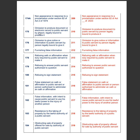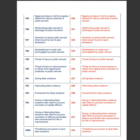Section 183 of the IPC deals with resistance to the taking of property by the lawful authority of a public servant, whereas Section 218 of the BNS deals with resistance to the taking of property by the lawful authority of a public servant. Section 184 of the IPC deals with obstructing sale of property offered for sale by authority of public servant, whereas Section 219 of the BNS deals with the same. Section 185 of the IPC deals with illegal purchase or bid for property offered for sale by authority of public servant, whereas Section 220 of the BNS deals with the same. Section 186 of the IPC deals with obstructing public servant in discharge of public functions, whereas Section 221 of the BNS deals with the same.